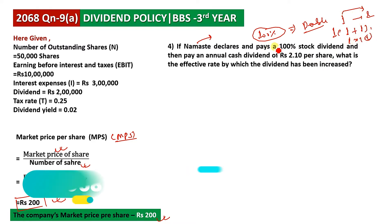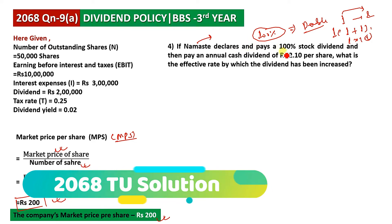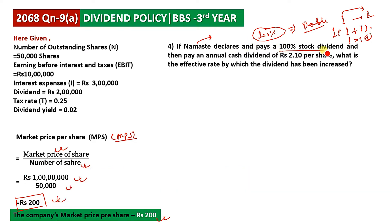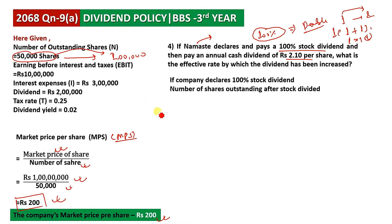Under a 100% stock dividend, the number of shares doubles. The original shares are 50,000, so after the 100% stock dividend, the new number of shares becomes 1,00,000. The dividend per share adjusts accordingly to reflect the doubled share count.